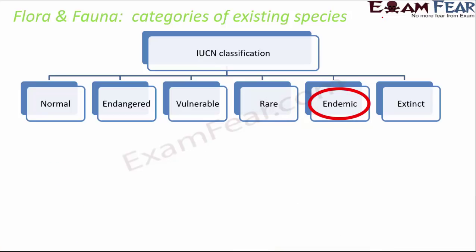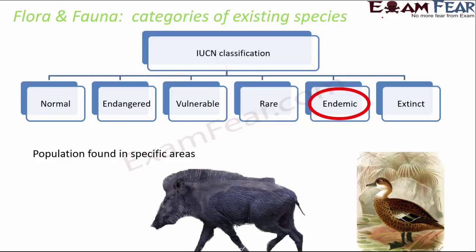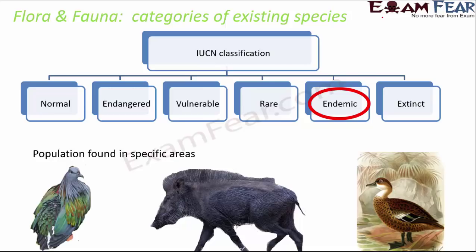The fifth category is endemic species — species found in specific areas only, isolated by natural or geographical barriers. For example, the Andaman teal is specifically found in the Andaman Islands and not anywhere else. Similarly, the wild pig and the Nicobar pigeon are found specifically in the Andaman and Nicobar Islands. Knowing which species are endemic helps us take targeted action in those areas to protect and preserve those animals.